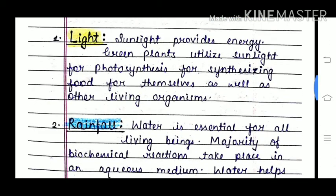Light is the most crucial part of our environment. Sunlight provides us energy. Green plants utilize sunlight for photosynthesis, synthesizing food for themselves as well as other living organisms.